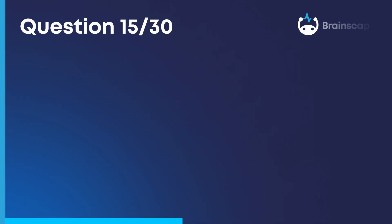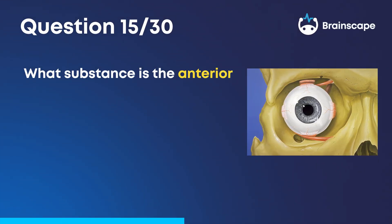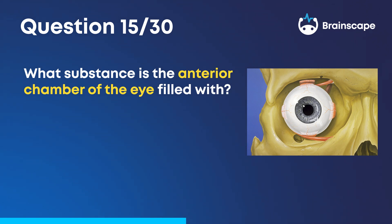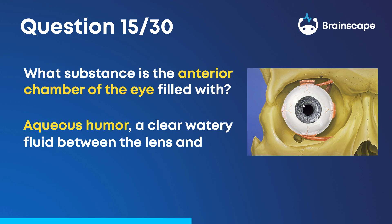Question 15. What substance is the anterior chamber of the eye filled with? Aqueous humor — a clear, watery fluid between the lens and the cornea.